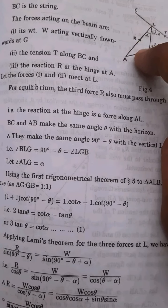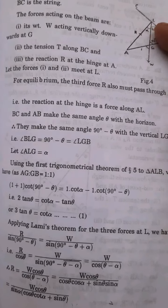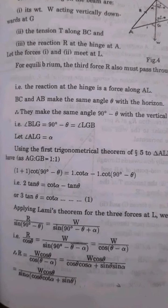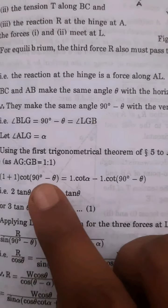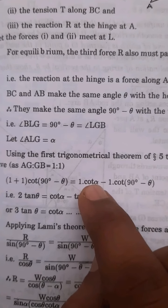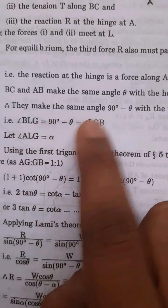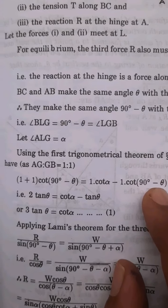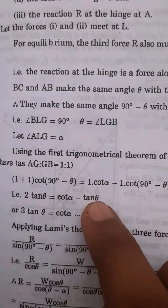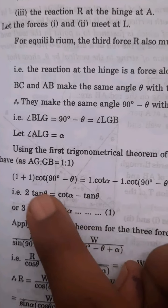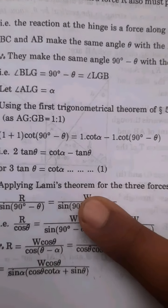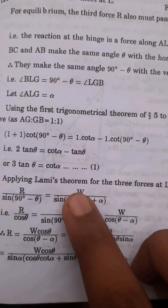Let angle ALG be alpha. We apply the trigonometrical theorem. This gives cot(90 − θ) = tan θ. So cot α minus tan θ, rearranging gives 3 tan θ = cot α.